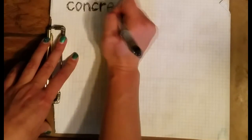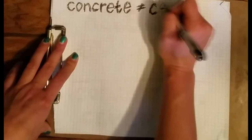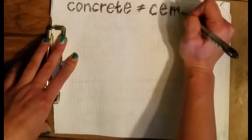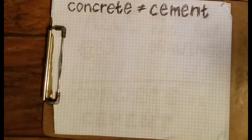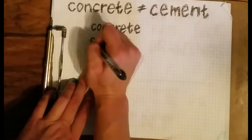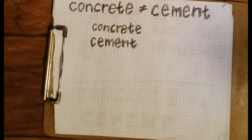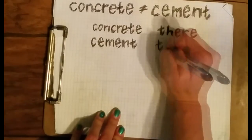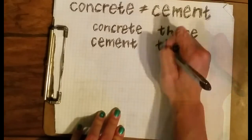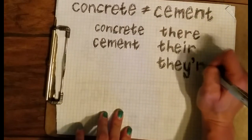First off, concrete and cement are not the same materials. If you use concrete and cement interchangeably, it's similar to using their, there, and they're interchangeably. They have different meanings and should be used in different contexts.